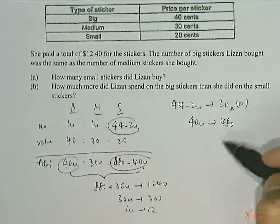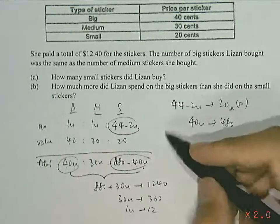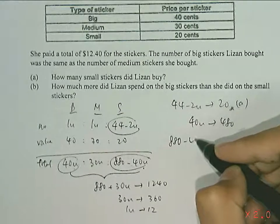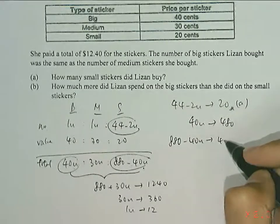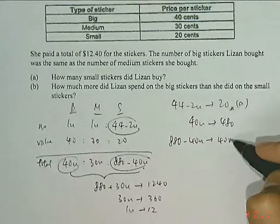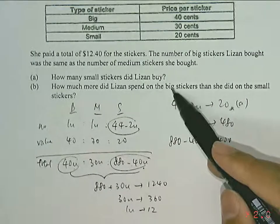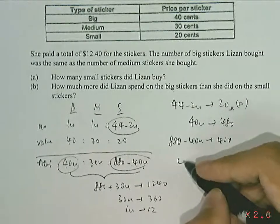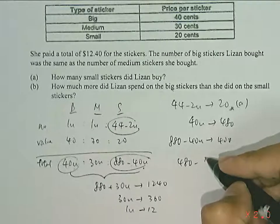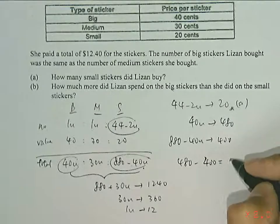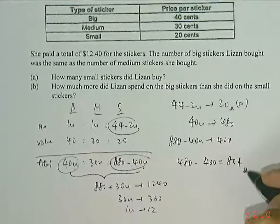And then for the amount spent on the small stickers, that's 880 subtracting off 480. So that's 400 cents. So the difference between the amount spent on the big and small stickers would then be 480 subtracting off 400, which will be 80 cents for part B.